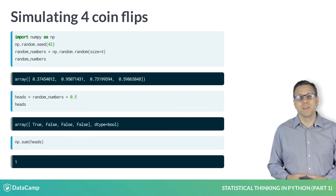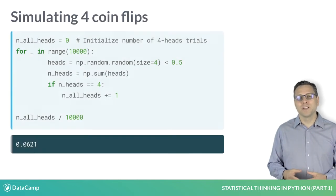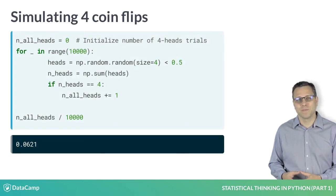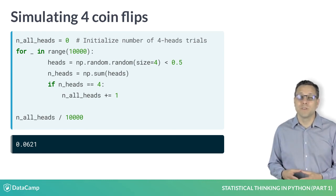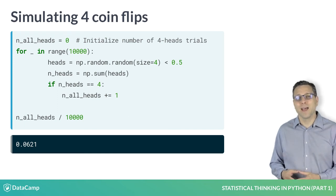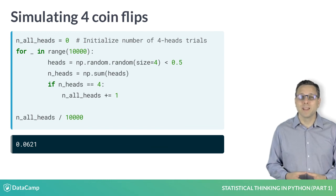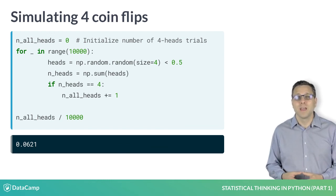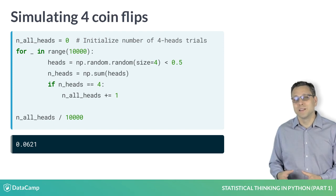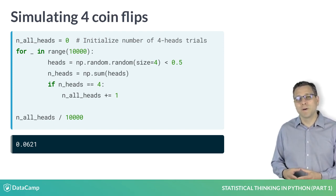We want to know the probability of getting four heads if we were to repeat the four flips over and over again. We can do this with a for loop. We first initialize the count to zero. We then do 10,000 repeats of the four flip trials. If a given trial had four heads, we increase the count. So what is the probability of getting all four heads? It's the number of times we got all heads divided by the total number of trials we did. The result is about 0.06.